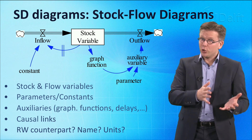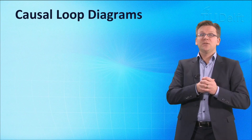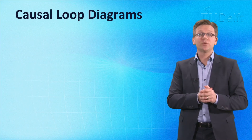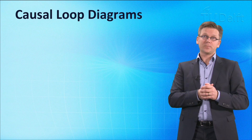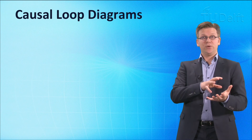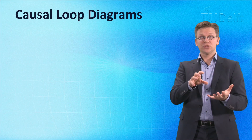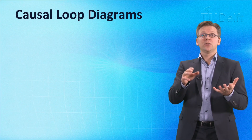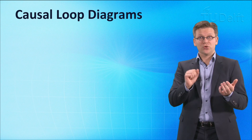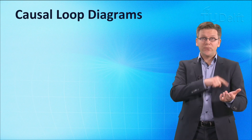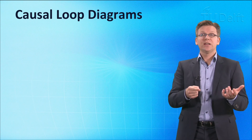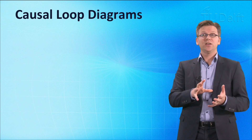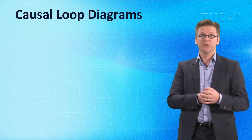For this purpose, system dynamicists use causal loop diagrams. These show causal links between the main variables, the polarity of these causal links, the feedback loops, and the polarity of these feedback loops.